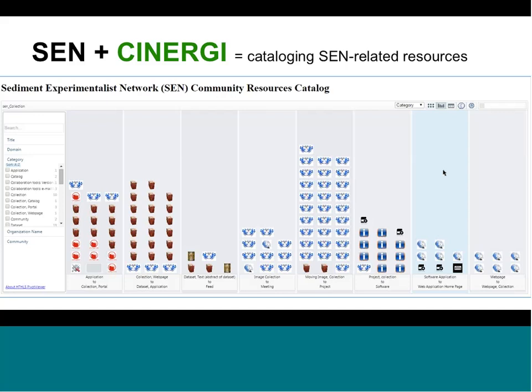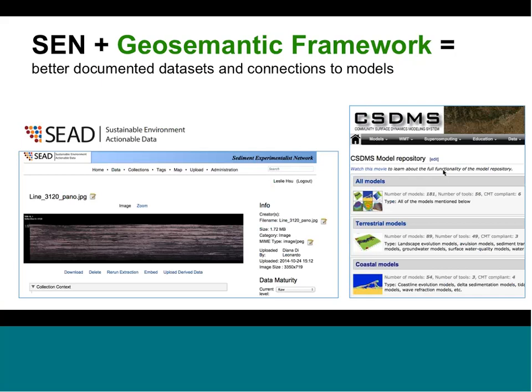Finally, we have a project with the GeoSemantic Framework building block — the GeoSemantic Framework for Long-Tail Data and Models — leading to better documented datasets and connections to models. We've always had the goal of better documenting our datasets using technologies such as the SEAD active content repository. Many of our colleagues and experimentalists have contributed to the CSDMS — Community Surface Dynamics Modeling System. In the SEN RCN itself it's not in scope to work deeply on metadata annotations and model linkages, so we're working on that through this partnership.